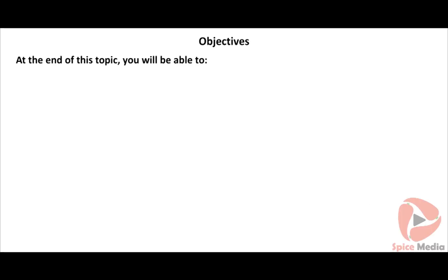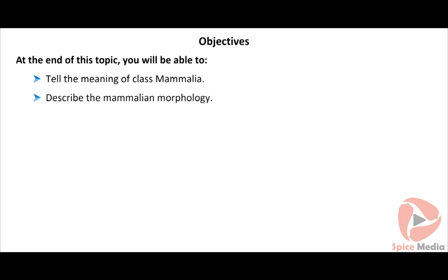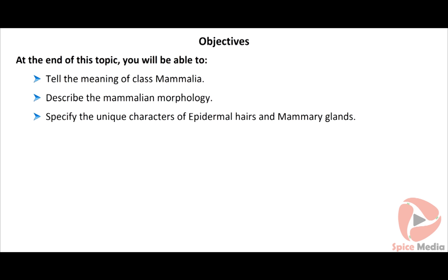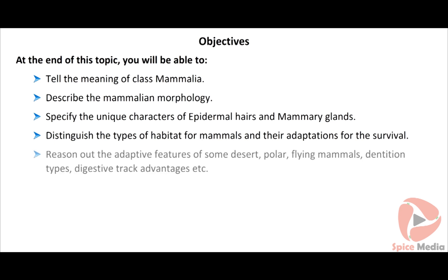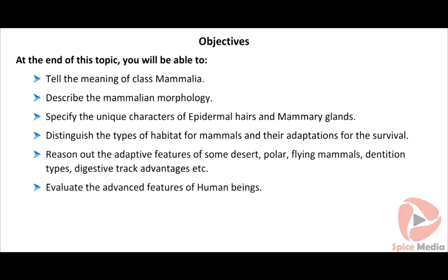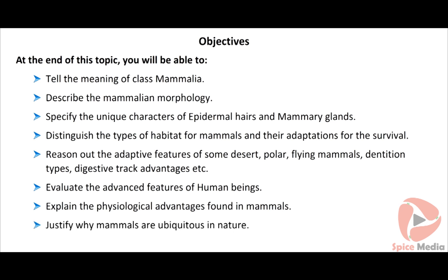At the end of this topic, you will be able to tell the meaning of the class Mammalia, describe the mammalian morphology, specify the unique characters of epidermal hairs and mammary glands, distinguish the types of habitat for mammals and their adaptations for survival, reason out the adaptive features of some desert, polar, and flying mammals, dentition types, digestive tract advantages, and evaluate the advanced features of human beings.